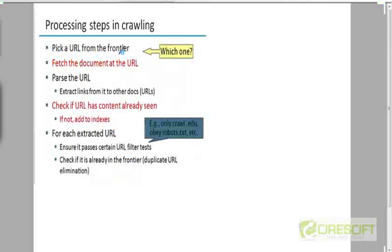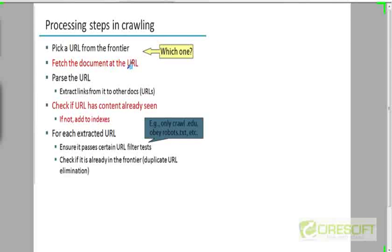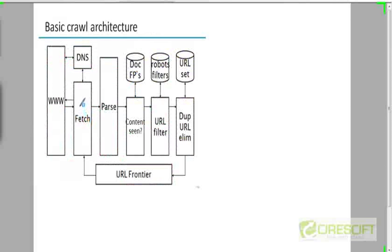You pick a URL from the frontier. The fetcher module will fetch the next URL from the URL frontier and send a request to the server that has that document stored. To do that, it must translate the URL into an IP address, which is done by the DNS server. The DNS server sends back an IP address, and then the fetcher retrieves the document from that address.